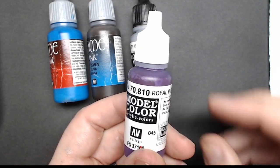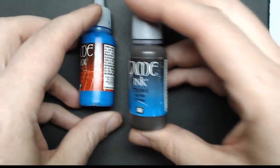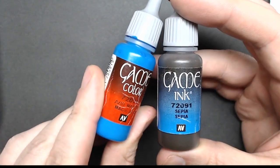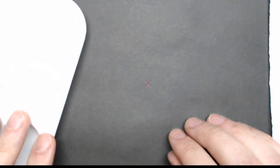We'll be using Royal Purple from Vallejo Model Color, I've got a silver, the Model Air version but any silver will work. I've also got Game Color Sepia Ink and Game Color Magic Blue. If you don't have these exact colors just pick something fairly close, they'll work just fine.